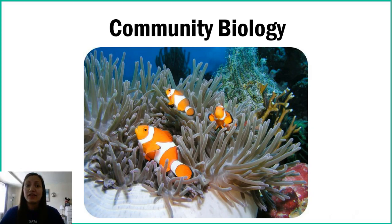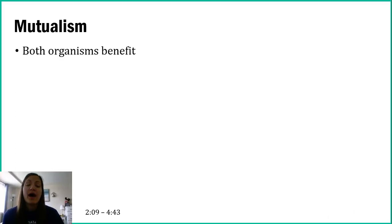We've actually learned about a lot of these interactions in this course, but this lecture video focuses on those interactions and introduces a bunch of different types of examples as well. The first type of community interaction we'll talk about is mutualism. With mutualism, both organisms in that relationship are benefiting from being in that relationship with one another.